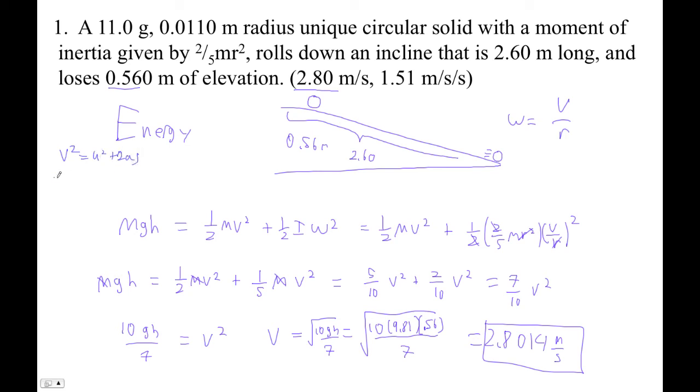So the final velocity 2.8014² is 0² plus 2 times the acceleration times 2.6 meters. So I'm going to take that number, square it, divide it by 2, divide it by 2.6, and I get 1.509. The acceleration is 1.509 meters per second squared. Always my favorite way to do it is energy.